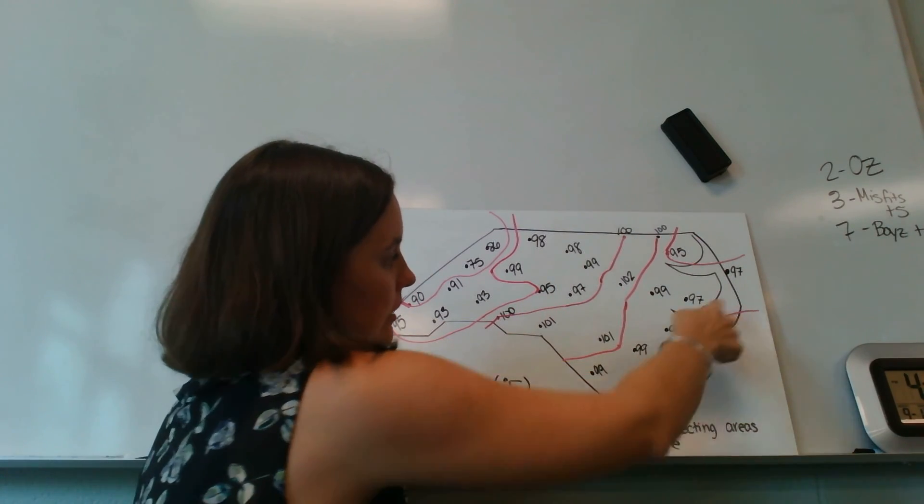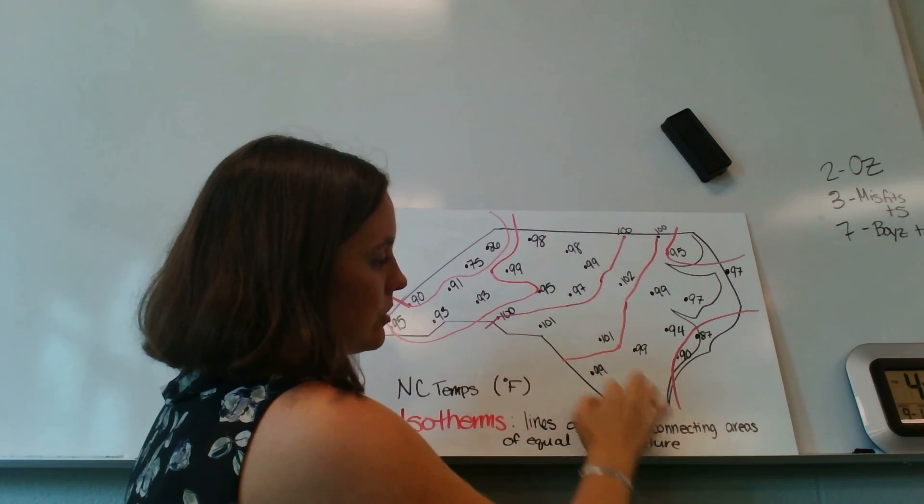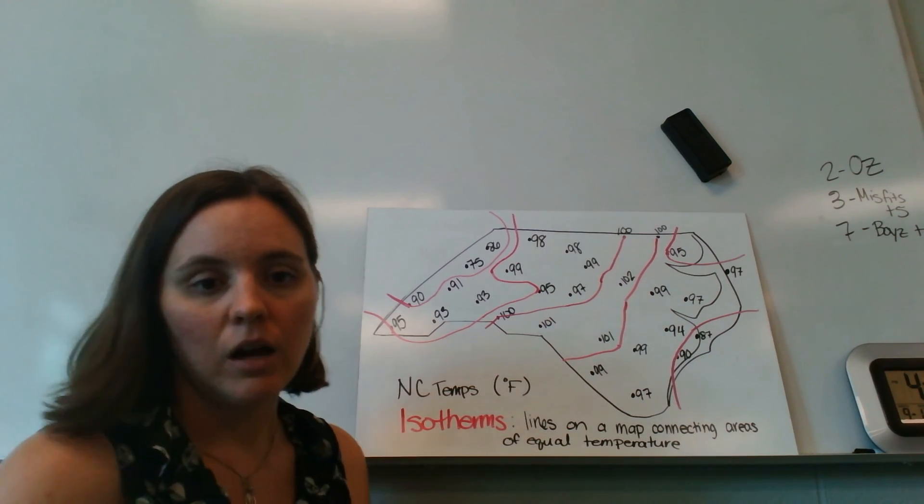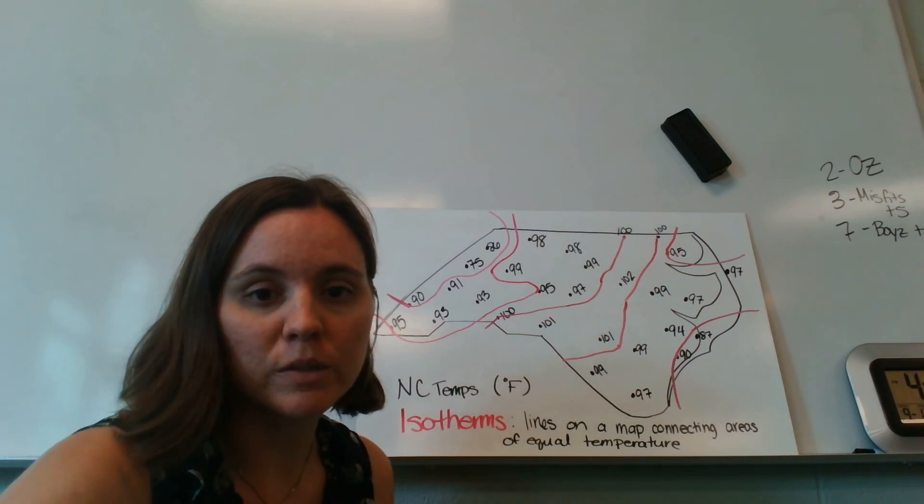And then again here, I could only go between two numbers. And so I had to steer clear of all these other numbers that 90 degrees is not in between. So that's how you draw isotherms on a map.